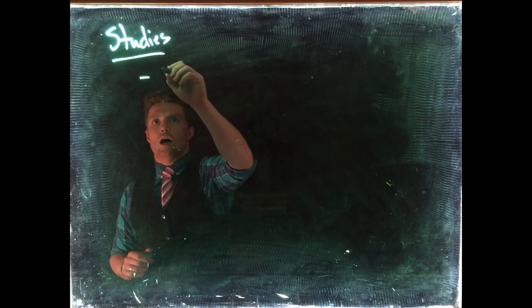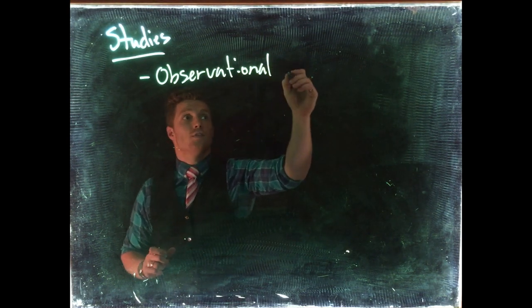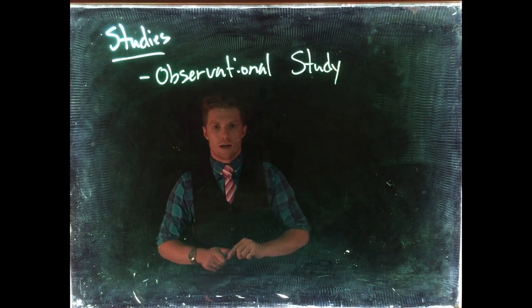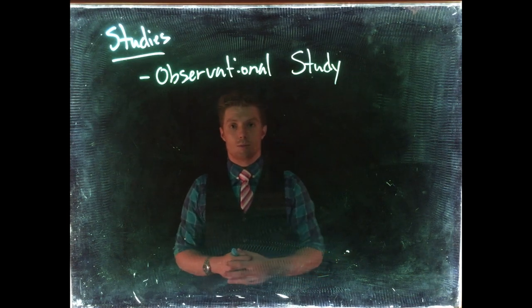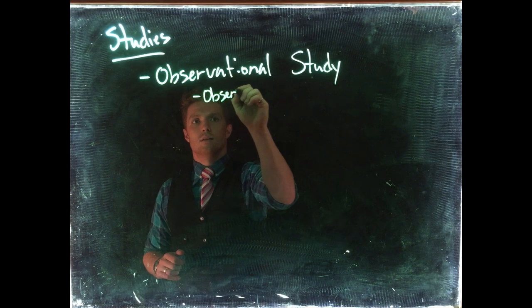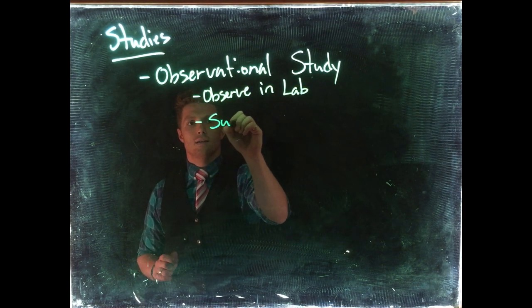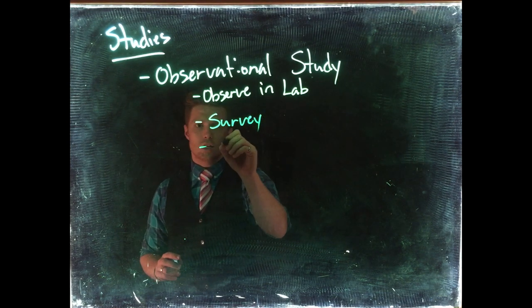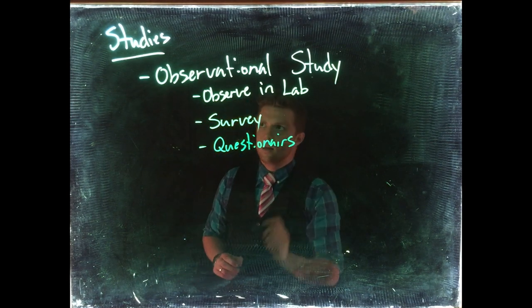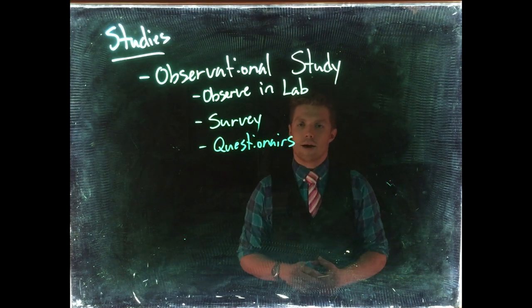The first type is an observational study. Observational studies are done where we are literally just observing our subjects. Sometimes we can do this by observing in a lab, we can send out a survey, or we can do questionnaires, but we are really just doing observations about our subjects.